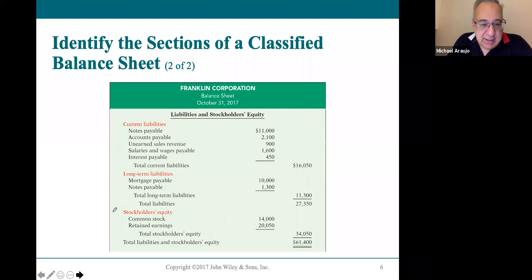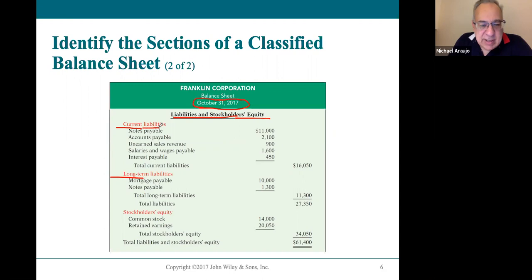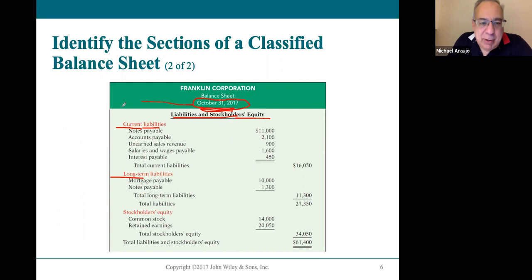On the liability side, it's simpler — liabilities are only broken into current and long-term. Current liabilities are debts or obligations owed within a year from the date of the balance sheet. For example, on this balance sheet dated October 31, 2017, anything due before October 31, 2018 is a current liability. Anything not due until after that date is a long-term liability.